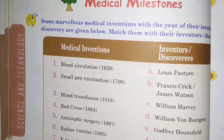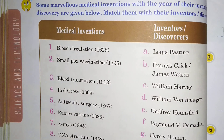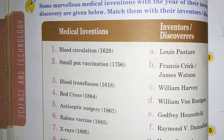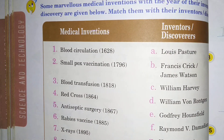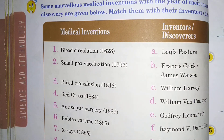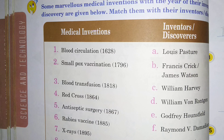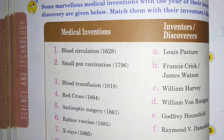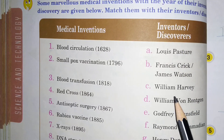First one is blood circulation. Blood circulation 1628 mein invent kya gya tha, that is option C, William Harvey ni.